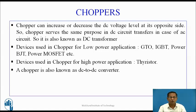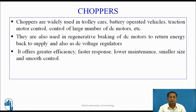A chopper is also known as a DC to DC converter. Choppers are widely used in trolley cars, battery operated vehicles, traction motor control, and control of a large number of DC motors. They are also used in regenerative braking of DC motors to return energy back to the supply, and also as DC voltage regulators. It offers greater efficiency, faster response, lower maintenance, smaller size, and smooth control.